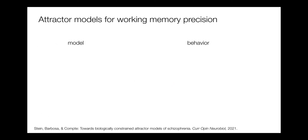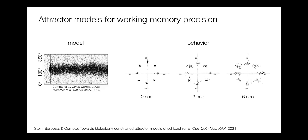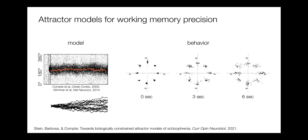How can we explain working memory precision with these attractor models? We look at the decoder of what memory has been held within a network throughout the delay period, then simulate this many times and see how the decoder changes throughout the delay. What we see over many trials is that there is a diffusion process that always goes in a different random direction — like a random walk. When we simulate it several times, the spread of the different responses gets higher and higher, just as we have seen in the behavior from the monkey study, which we also see in humans.